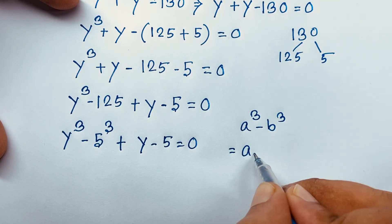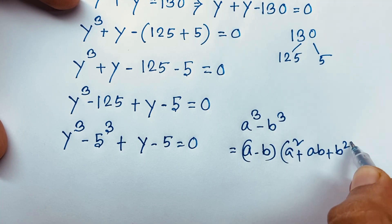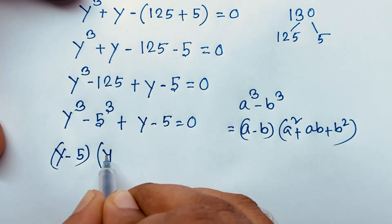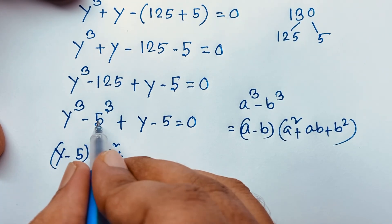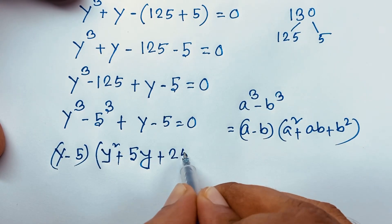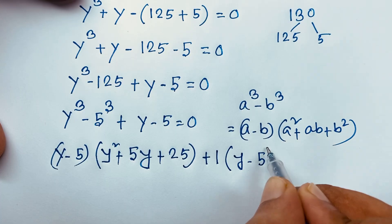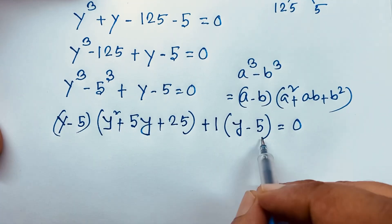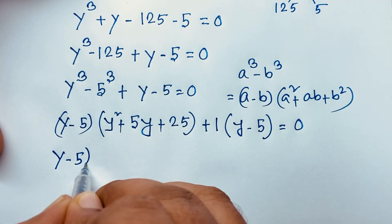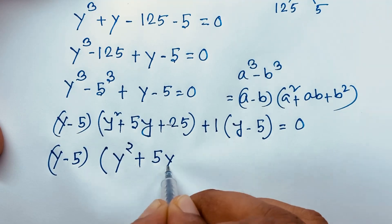We apply the identity a³ minus b³ equals (a minus b)(a² plus ab plus b²). With a equal to y and b equal to 5, this gives (y minus 5)(y² plus 5y plus 25). Then factoring the remaining y minus 5 term, we take (y minus 5) as common, giving (y minus 5)(y² plus 5y plus 26) is equal to 0.